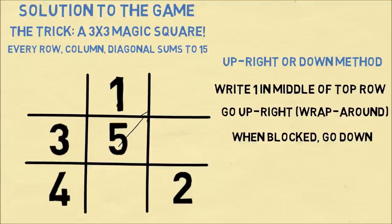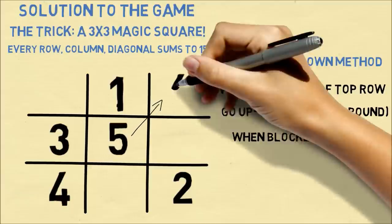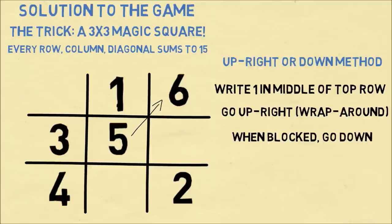So in the center square, we have a 5. In the upper right-hand corner, we have a 6. Now we're going to try and go up and to the right. We're going to need to wrap this around. We're once again blocked, so we need to go down from where the 6 is. That's where 7 will be.